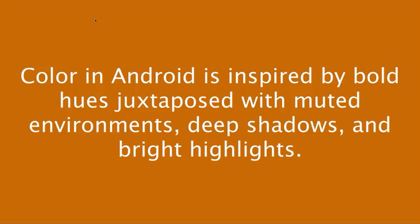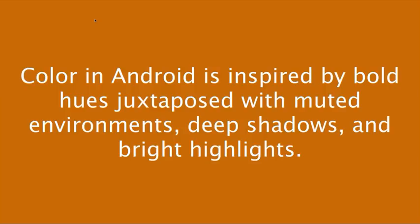The Material Design doc is fabulous — it's laid out great, gives you some do's and don'ts. Google says color in Android is inspired by bold hues juxtaposed with muted environments, deep shadows, and bright highlights. What they're basically telling you is to limit your color selection by choosing a couple of colors: a primary, maybe an accent color, and then use opacity for text. Google says you should pick a primary color in the 500 range, then a lighter and a darker version — so in your code you would have just three colors, plus an accent.